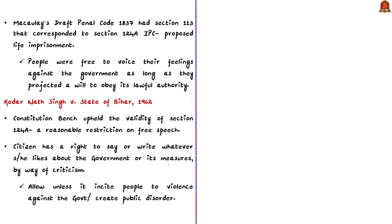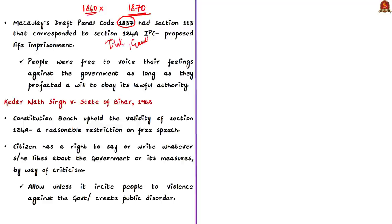Coming to the history of sedition law in India, it was initially included in Lord Macaulay's draft penal code of 1837. However, in the enacted form of 1860 this section was missing, and later in 1870 it was added to the IPC with punishment of life imprisonment. The intent was to punish acts exciting feelings of disaffection towards the government. Freedom fighters like Bal Gangadhar Tilak and Mahatma Gandhi were charged with sedition by the British. So a section used by the colonial government against Indians is still available in India's penal code even after independence.